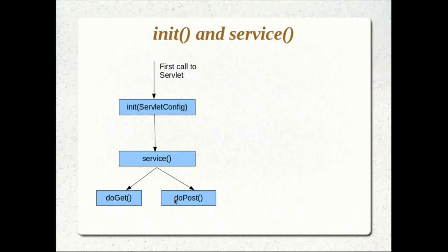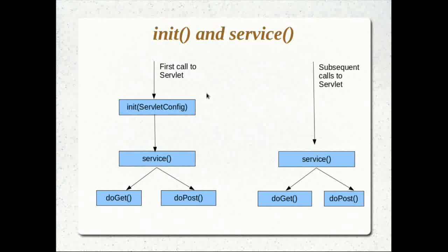There are also other HTTP methods like PUT and DELETE, with corresponding doPost and doDelete methods, but most of the time we use just doGet and doPost. After the first call, the servlet has been initialized and the object exists in Tomcat's JVM. Subsequent calls will directly go to the service method — there's no need to call init again because the object is already there. The same object caters to different requests, so subsequent calls go directly to the service method, which then calls doGet or doPost.